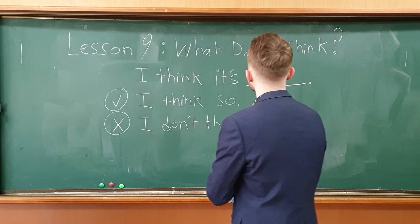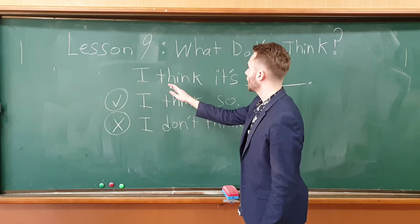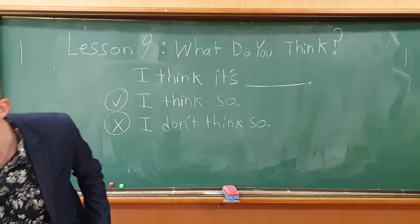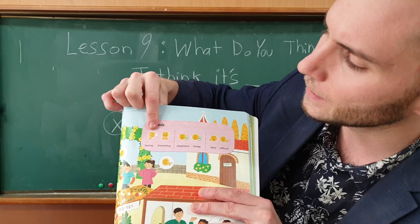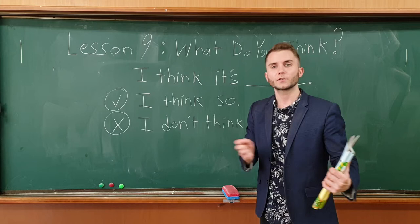So our main question is the same as the lesson name. What do you think? So asking for your opinion. You would answer, I think it's blank. So let's take a look in your textbook and we have a bunch of words that you put after that. You'd say, I think it's boring. I think it's interesting. Expensive. Cheap. Easy. Difficult. Those are the ones you put in this sentence.